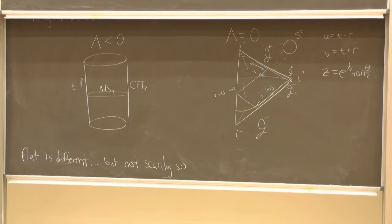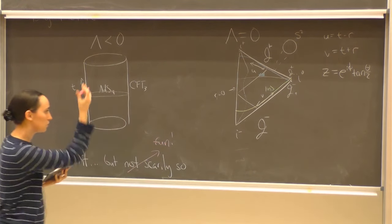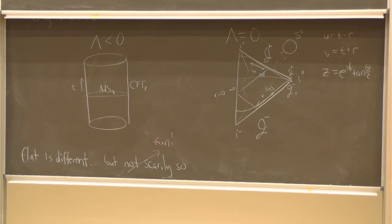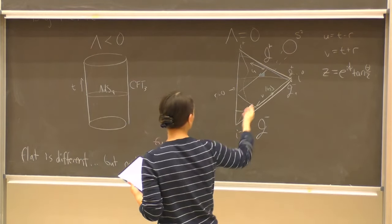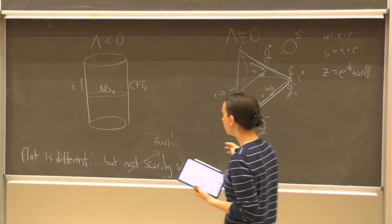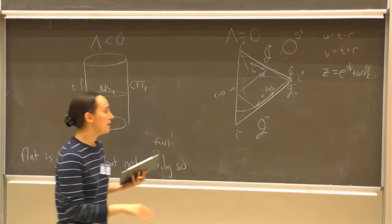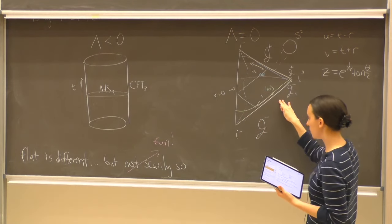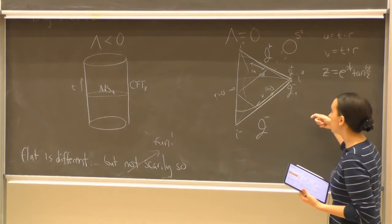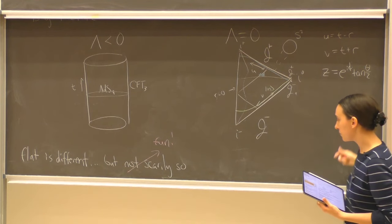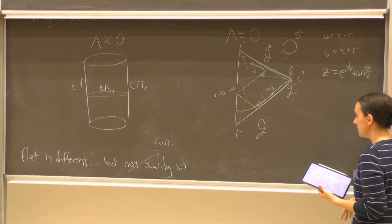Flat is different, but not scarily so. I can still think of my theory as living on the boundary, though you have to deal with issues such as time evolution along this null coordinate. I can view in- and out-states for my scattering matrix in terms of correlation functions pushed to the conformal boundary. If you have good intuition for AdS/CFT, a lot of the formalism — like an extrapolate dictionary — will still apply in the flat limit.